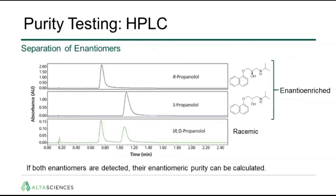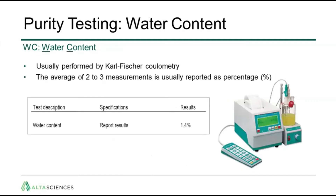For enantiomers, here is an example of HPLC chromatograms showing a racemic compound — R and S propranolol at the bottom — and enantiomer-enriched R propranolol at the top and enantiomer-enriched S propranolol in the middle. If both enantiomers are detected, then enantiomeric purity can be calculated and reported on the certificate of analysis. The water content or WC is very often performed for reference standard material. It is usually performed by Karl Fischer coulometry and the average of two to three measurements is usually reported as a percentage.